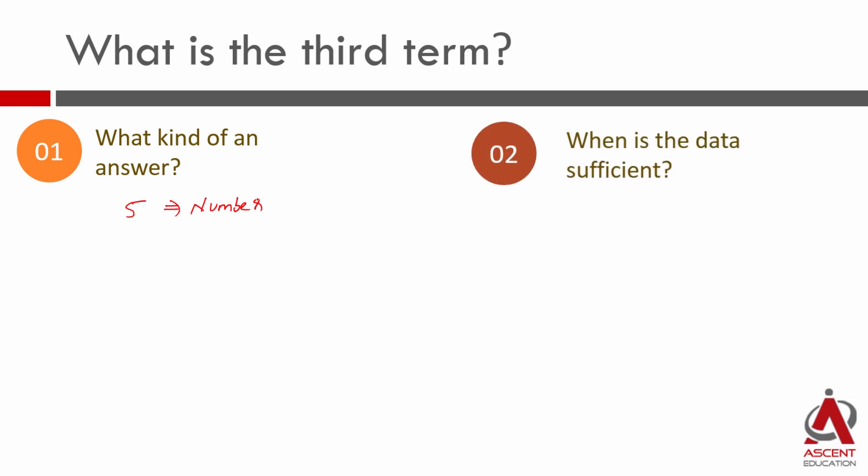When is the data sufficient? As I've repeated time and again with questions of this kind, when you're asked to find out what is the value of something, the data is sufficient only when you're able to get a unique value for it. More than one value means the data is not sufficient.